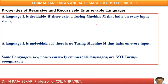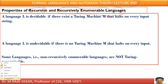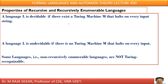My dear friends, welcome to Rajashekar classes on formal languages and automata theory. This is lecture number 90. In this lecture, we will try to understand properties of recursive and recursively enumerable languages. I request you to go through lecture number 89, that is my previous lecture, before understanding this lecture.